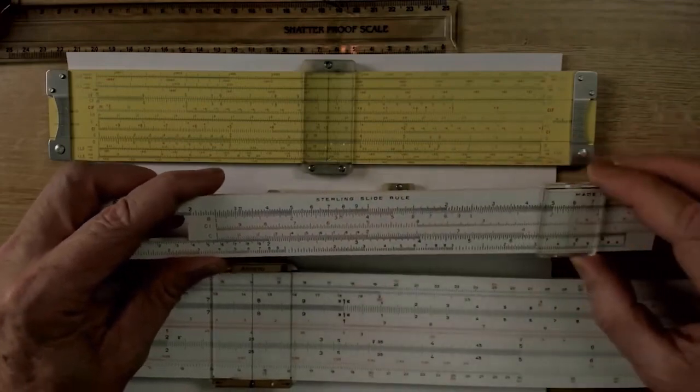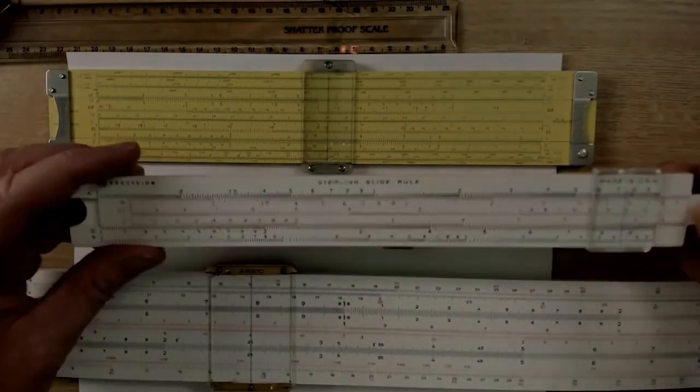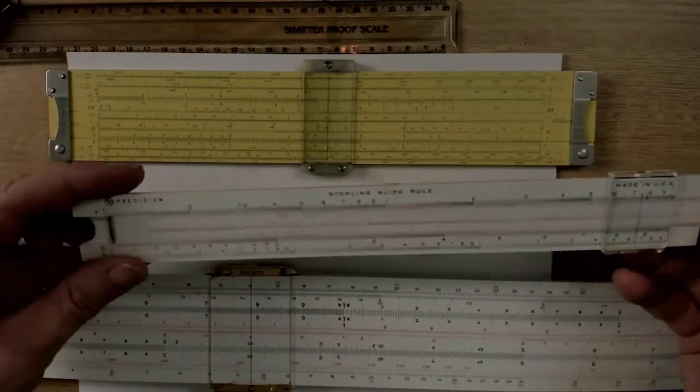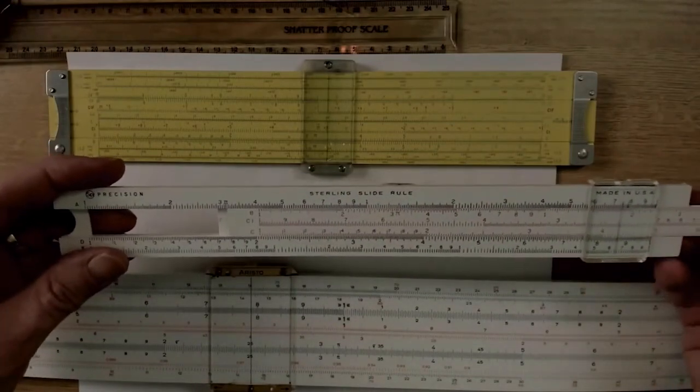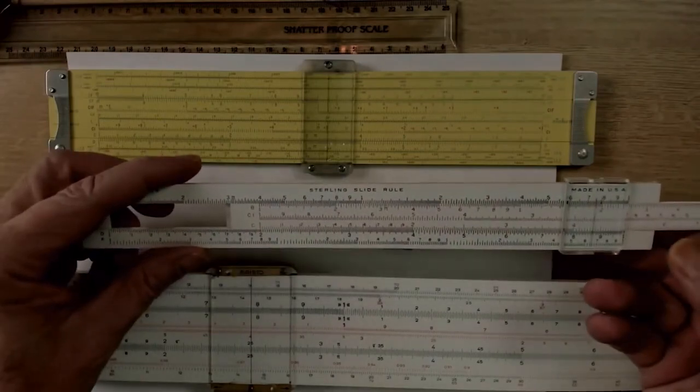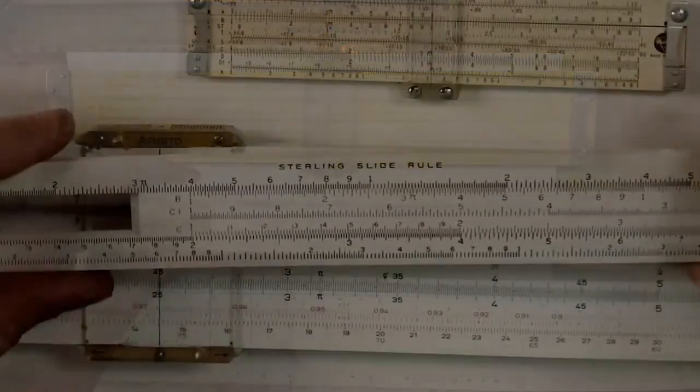Now, the way the slide rule operates is that you have two rulers that are the same length, and by moving one ruler on top of the other, you can add things together, and in this case, what we're adding is logarithms.